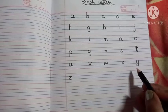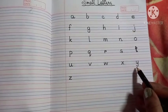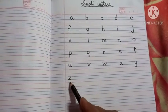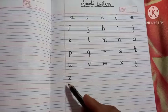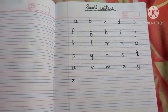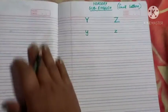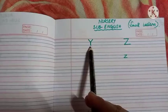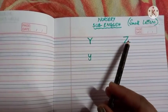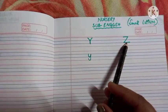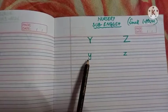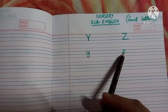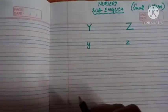So we will learn how to write these two letters — small letter Y and small letter Z. Here you can see the capital letter Y and the capital letter Z, and this is the small letter Y and this is the small letter Z.